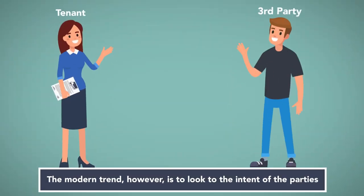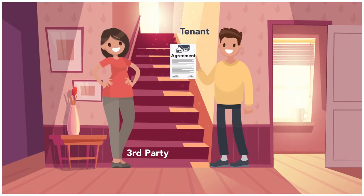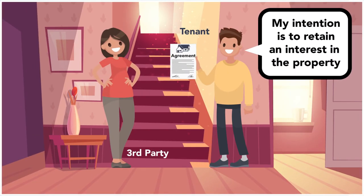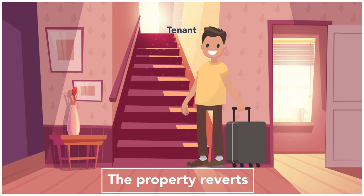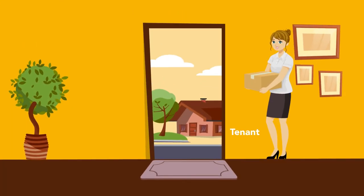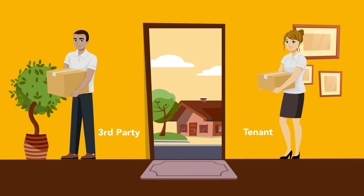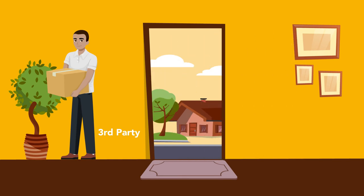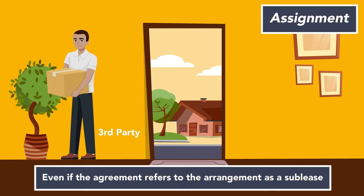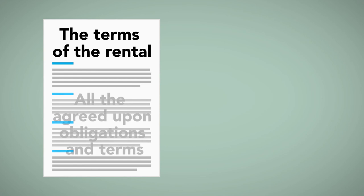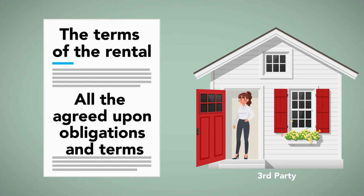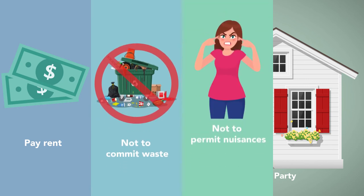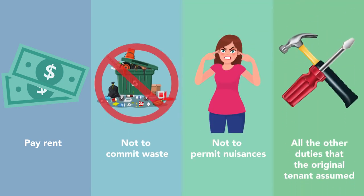The modern trend, however, is to look at the intent of the parties. If the tenant seemed to make an agreement with the intention of retaining an interest in the property, such as by reserving a right of entry or a date at which point the property reverts to him, this will likely be deemed a sublease. If the agreement transfers the property to a third party without signs of retaining a property interest, this will be considered an assignment, even if the agreement refers to the arrangement as a sublease. Note that the terms of the rental, including all the agreed upon obligations and terms, remain the same during the period that the third party occupies and possesses the property. The third party has the same obligation to pay rent, not to commit waste, not to permit nuisances, and all the other duties that the original tenant had assumed.